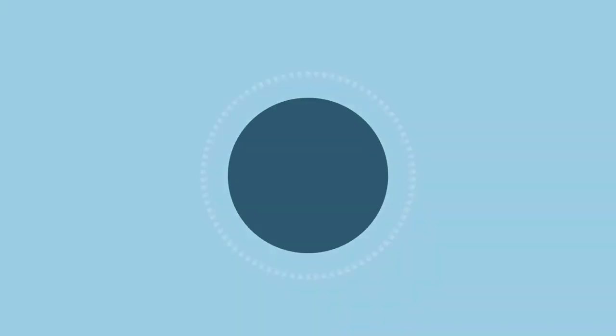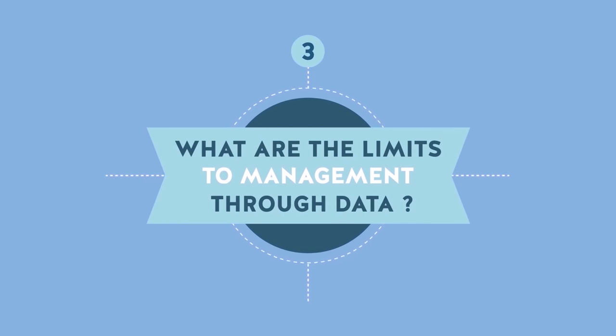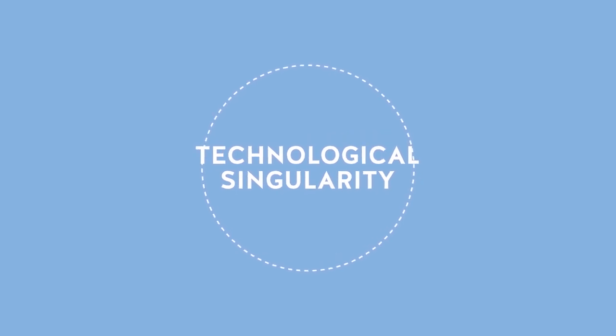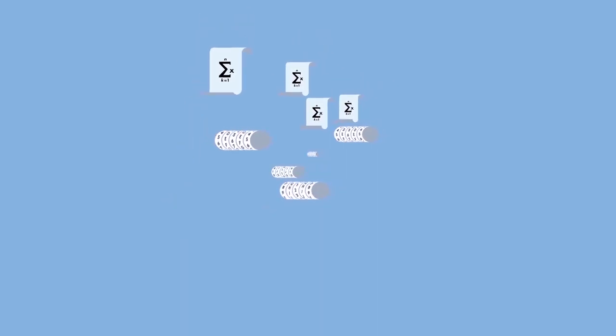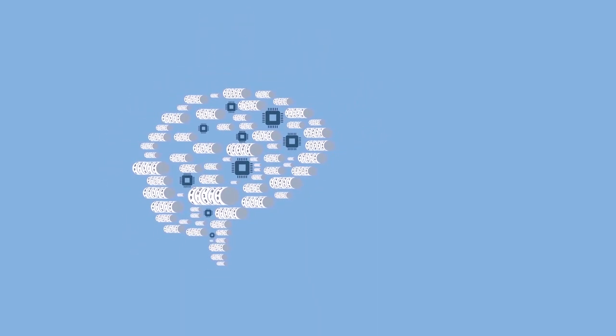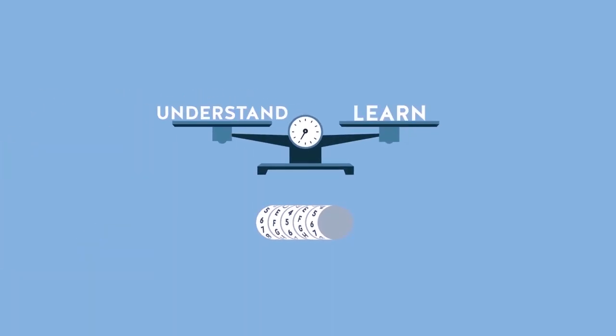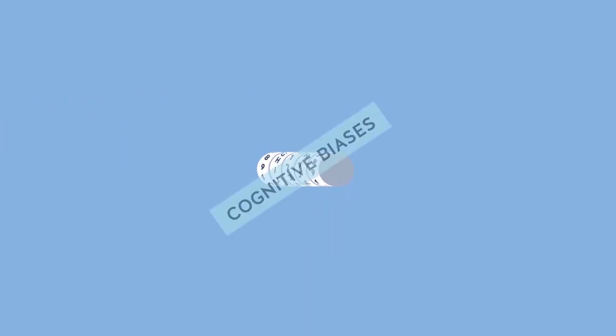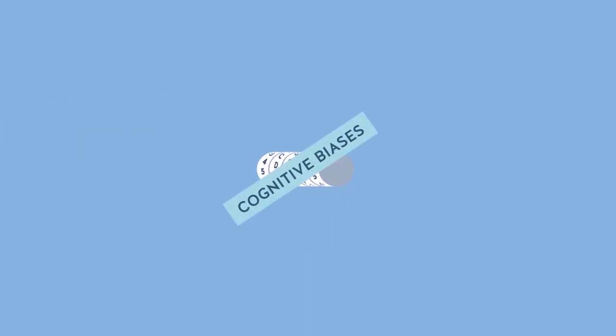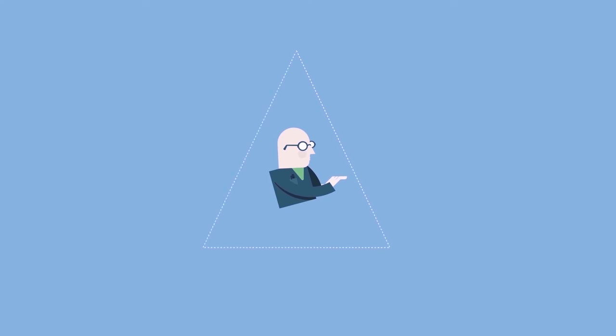What are the limits to management through data? Three types of limits exist. Technological singularity. Could an explosion in artificial intelligence take place, surpassing human intelligence? We need to remember that algorithms actually learn more than they understand. They create cognitive biases that require leaving the manager's intelligence its due place. Decisions are made based on a combination of intuition, algorithms, and experience.